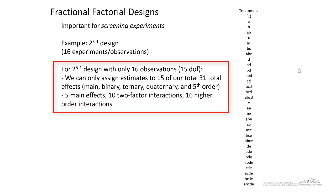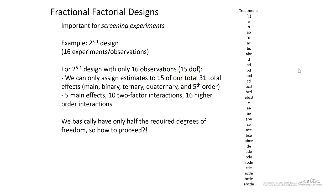We can only assign estimates, therefore, to 15 of our total 31 total effects: main, binary, ternary, quaternary, and 5th order interactions. So we basically only have half the required degrees of freedom. So how do we proceed? Somehow we have to pare down these 32 possible treatment combinations down to 16.